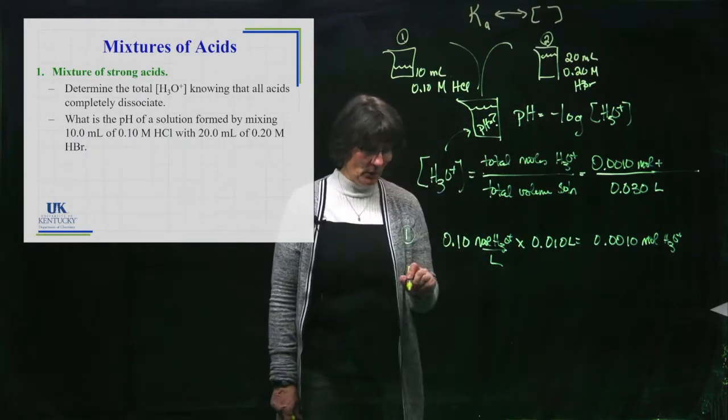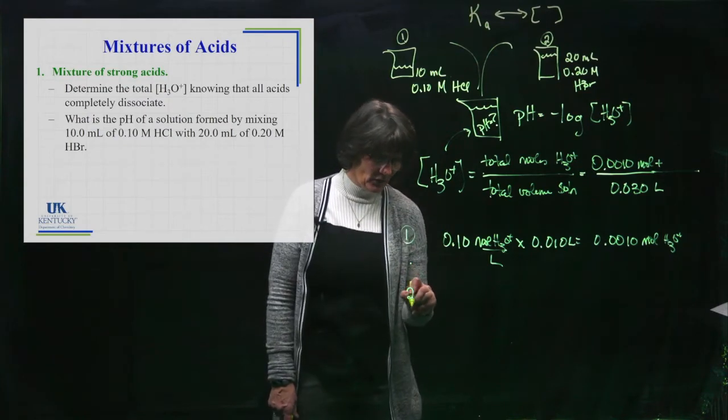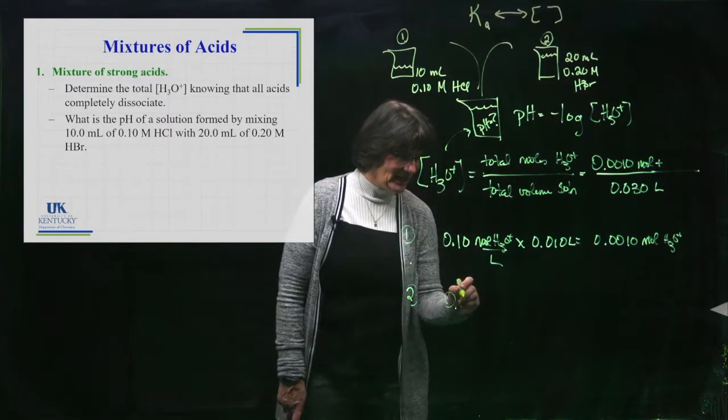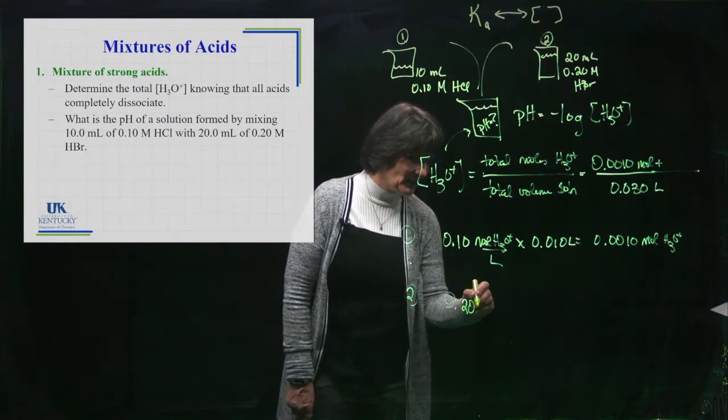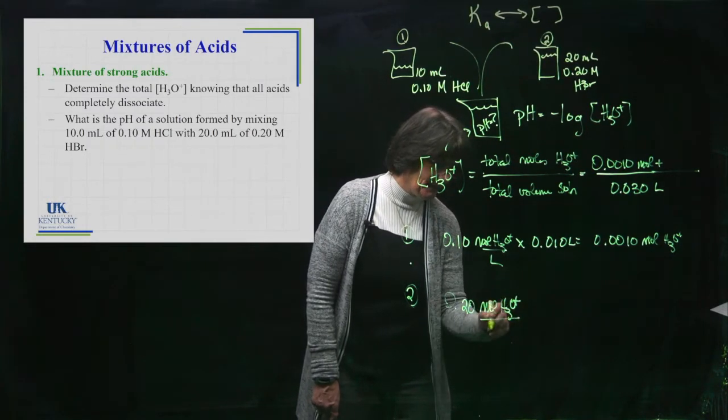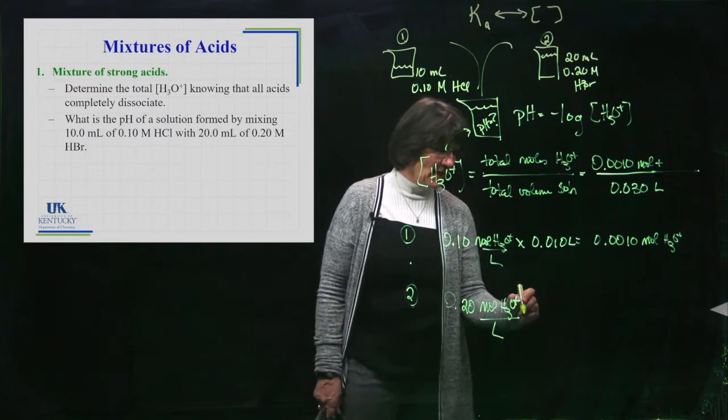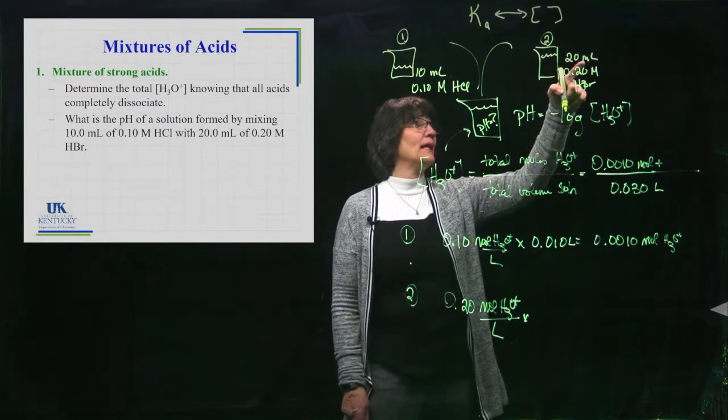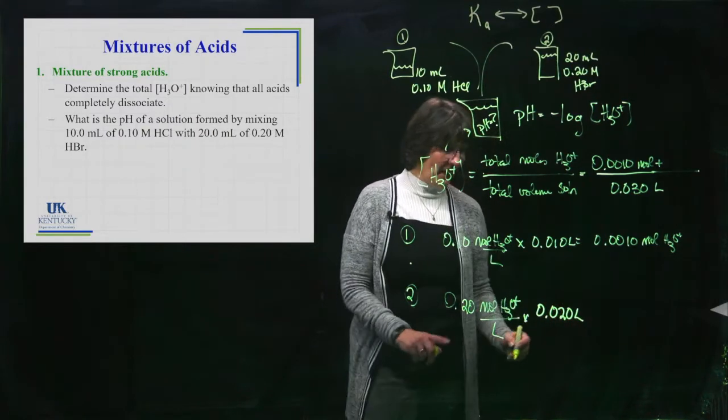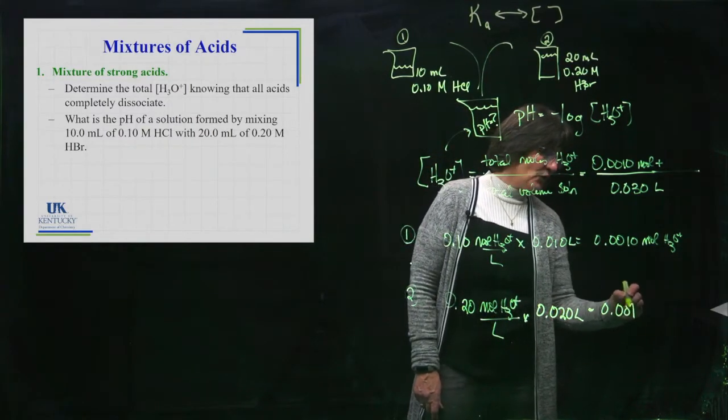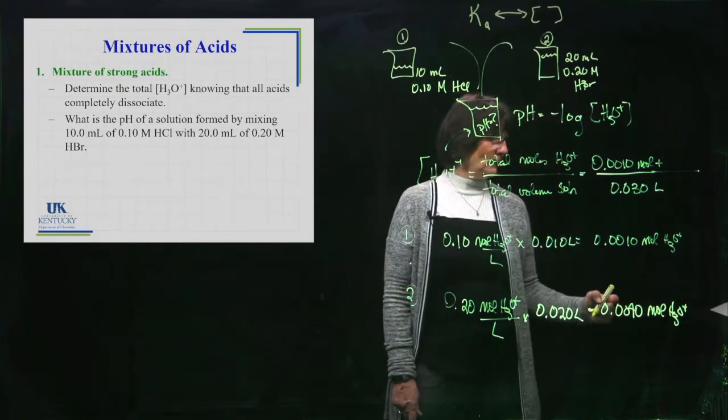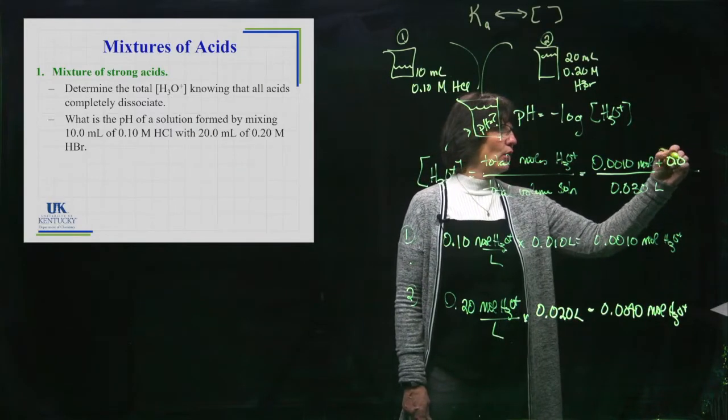In beaker number two, I'm going to do exactly the same thing. I've got a molarity of acid of 0.2. Since it's strong, this is the molarity of the H3O plus. I have the molarity of H3O plus. If I multiply by how many liters I have, which is 0.020 liters, that will give me 0.0040 moles of H3O plus.